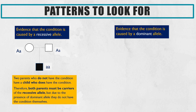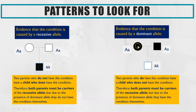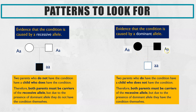Next, the pattern to look for to give evidence that the condition is caused by a dominant allele. This time, both parents would have the condition — so both shapes are coloured in black — but they have a child who does not have the condition. It's the exact opposite of the recessive pattern. The explanation is that both parents have the condition and must have at least one dominant allele, but the fact that they have a child without the condition means the child must be homozygous recessive. That is only possible if they inherited one recessive allele from each parent, meaning both parents are heterozygous.